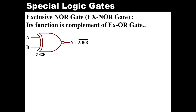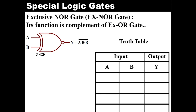So let's see its truth table. This is the truth table where A and B are all possible inputs and Y is the output. For A=0 and B=0, both inputs are equal so output will be high or 1. When A=1 and B=0, output will be 0. And for the last combination when A=1 and B=1, output will be 1 because of equal inputs. In this way XNOR gate performs the equality function.